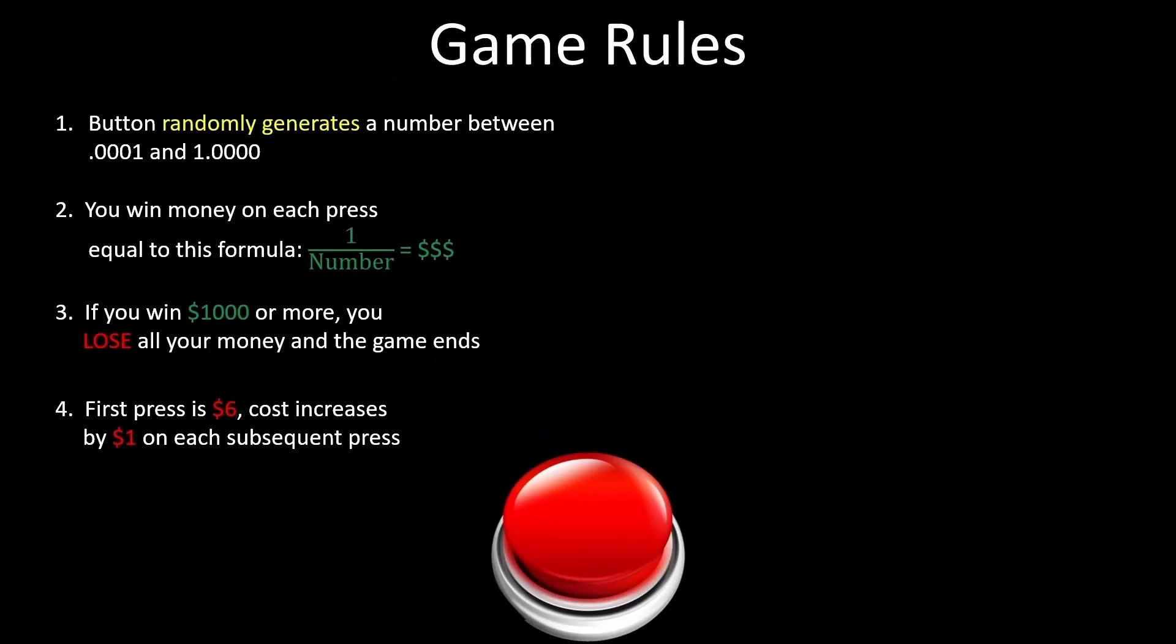Since our numbers can only have 4 decimal places, we know that the smallest number we can generate, let's call this s, is .0001. We also know that there are no numbers between .0001 and .0002, because there would have to be 5 decimal places for that to happen. This means all the different dollar amounts we can get, let's call this d, equals the amount of times we can add .0001 together before we get to 1, which is the same thing as dividing 1 by s. This equals 10,000.